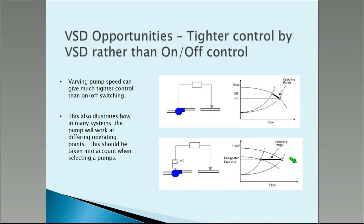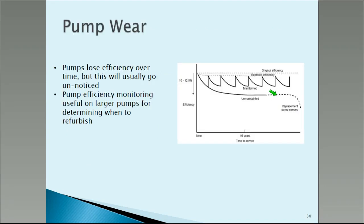A variable speed drive doesn't just save energy — it can also give you much tighter pressure control. You can have a variable speed drive driving a pump continuously backwards and forwards, rather than just occasionally turning a pump on and off. One interesting point is that in a real pumping system, there's not just one operating point — the pump will be working over several different operating points. That has implications for your choice of pump.